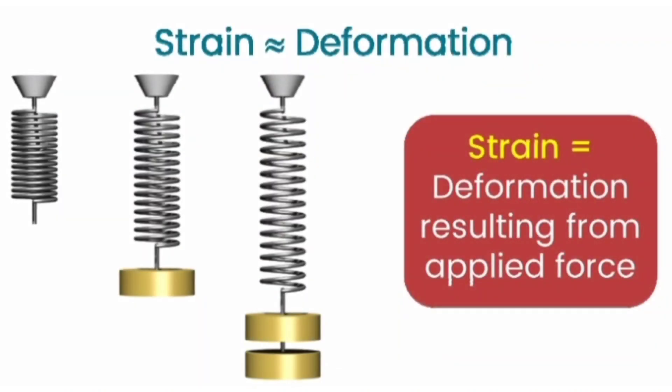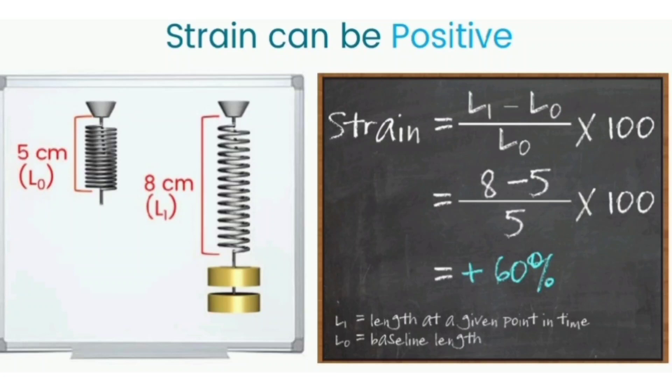Let's understand the term strain. Strain simply means deformation. To make it simple, let's take the example of a spring. Just like a spring has the ability to come back to its original form after stretching, similarly the heart's myocardium has the ability to come back to its original form after the cycles of systole and diastole.